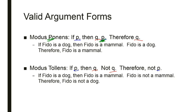All right, if Fido is a dog, then Fido is a mammal. Fido is not a mammal. Therefore, Fido is not a dog. Does that make sense?